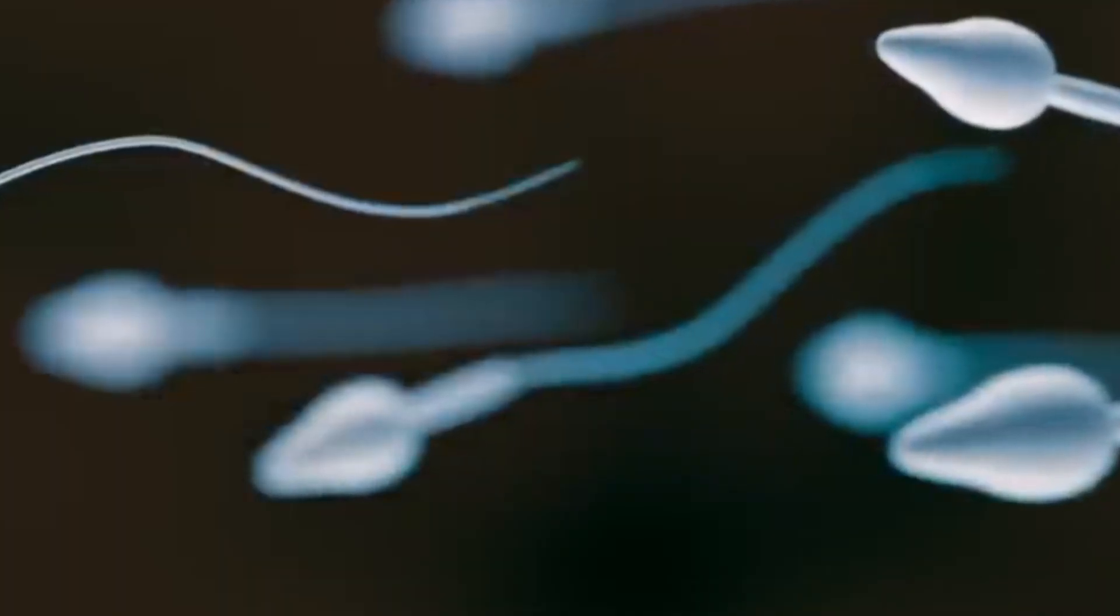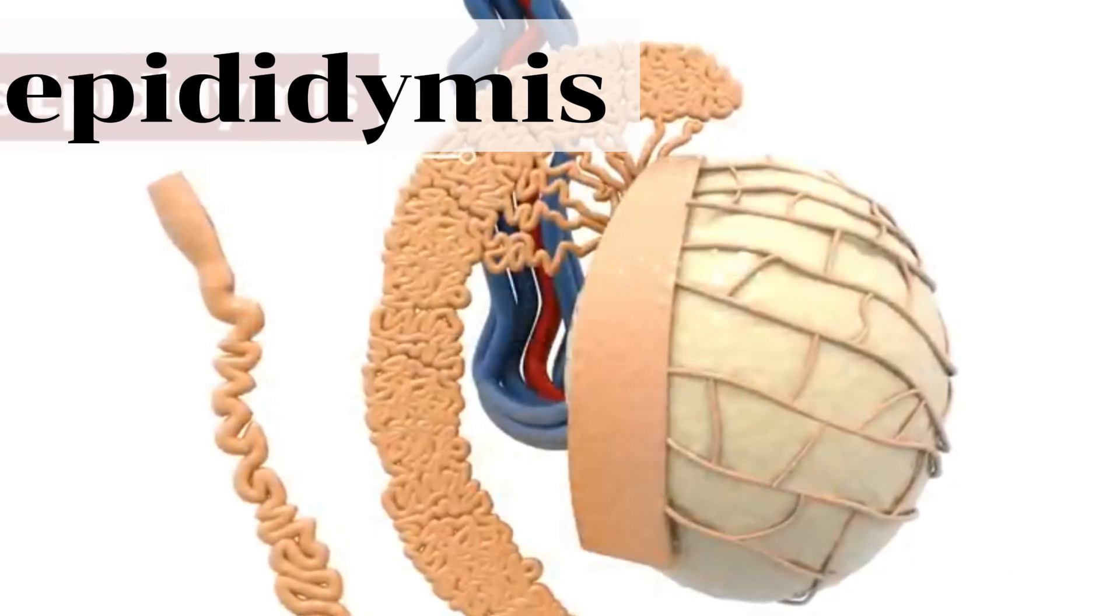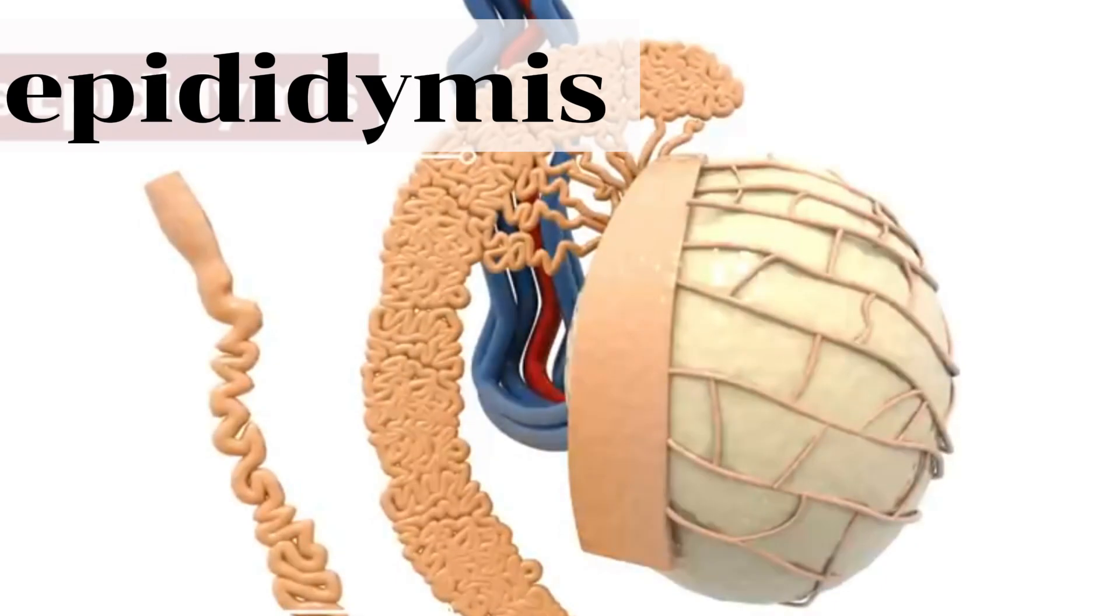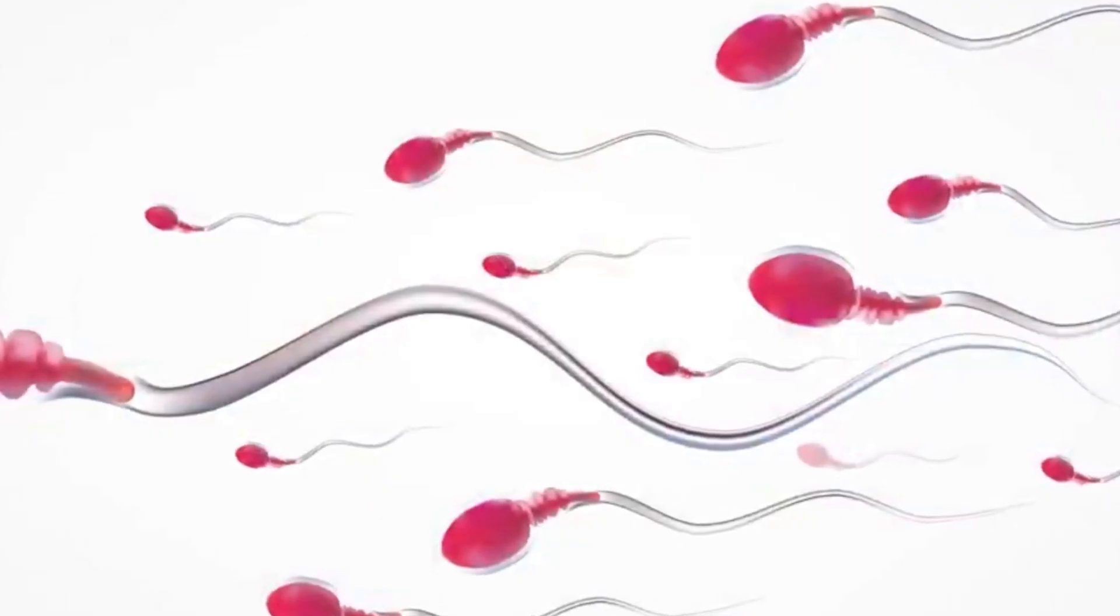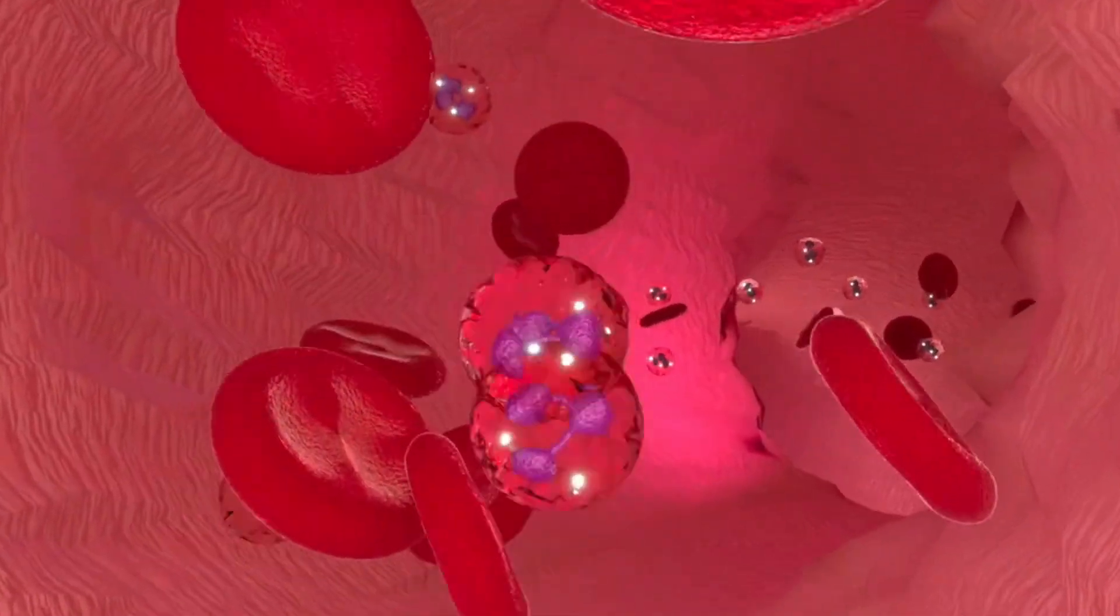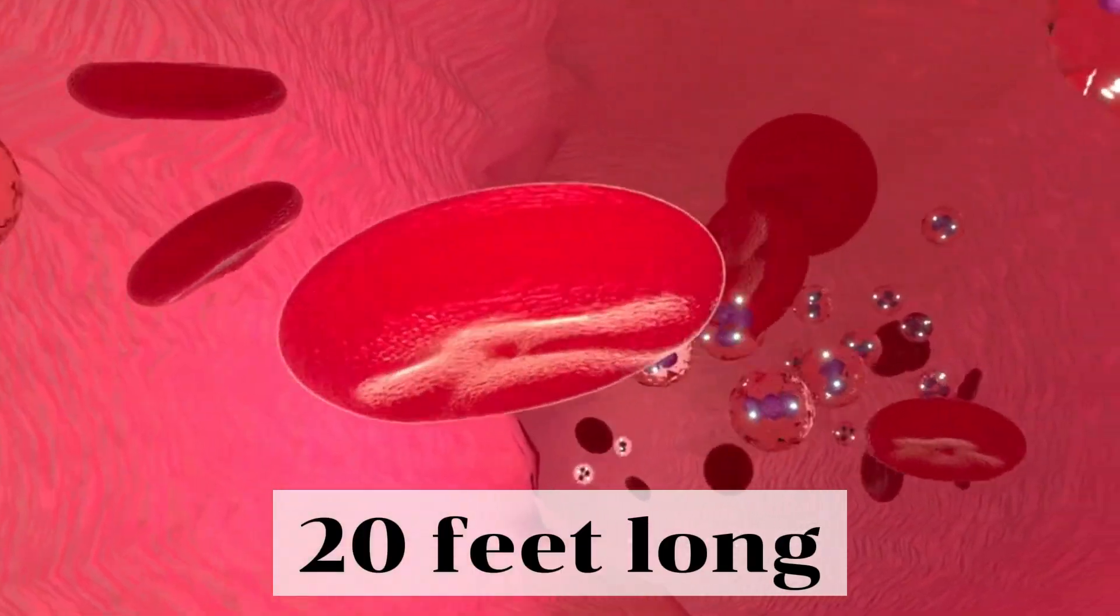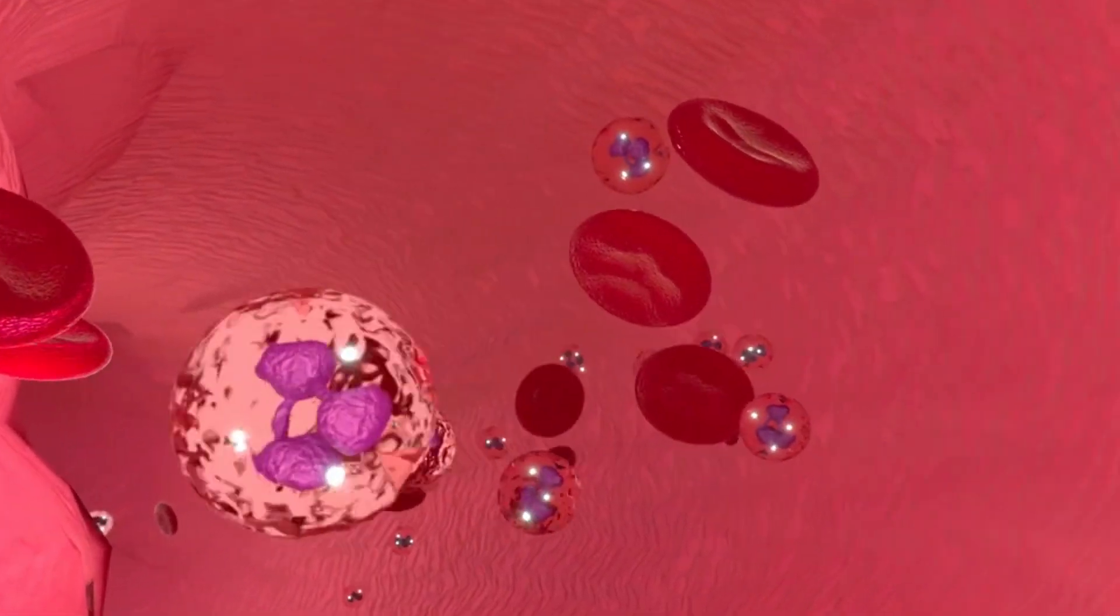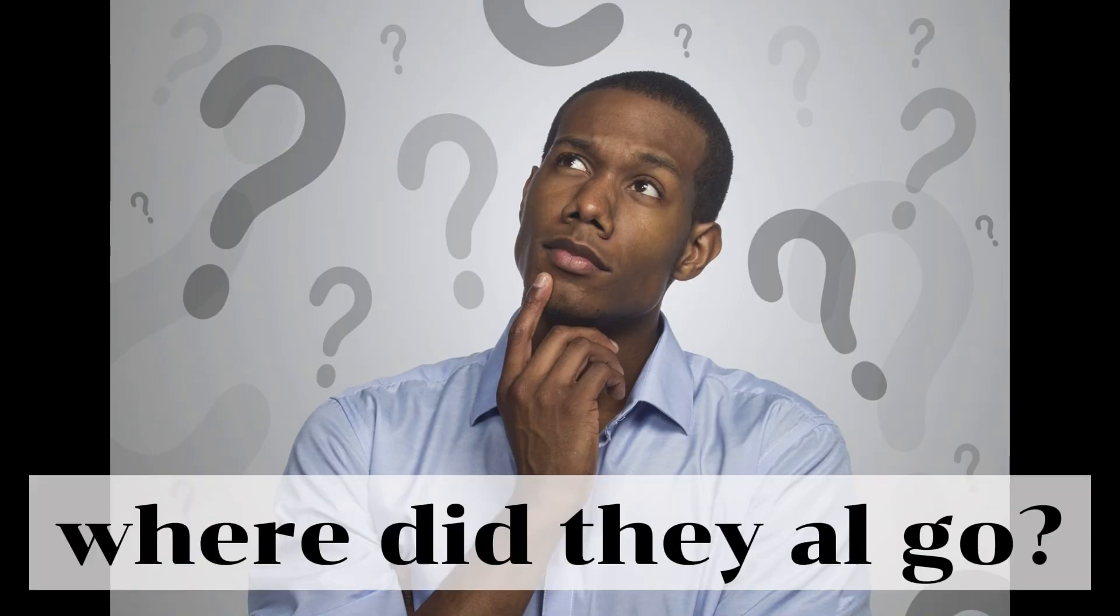Now once the sperm are created by these seminiferous tubules, they are stored in a 20-foot-long tube which eventually moves them into a structure on the backside of each testis called the epididymis. Inside the epididymis is a coiled tube called the ductus epididymis, which, if it were straightened out, could be up to 6 meters, or roughly 20 feet long. This is where sperm are stored and mature before being released from the body, and it provides an answer to the question, where do they all go? Because a 20-foot tube can hold a significant amount of microscopic sperm cells.